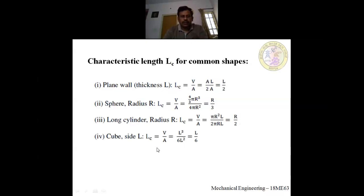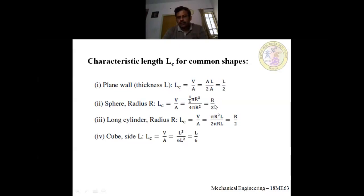For a cube, the volume is L³ and the total surface area is 6·L², since there are six faces each of area L². Dividing volume by area gives L³/(6·L²) = L/6. So the characteristic length for a cube is L/6. Try to remember these formulas as they will be useful when solving numericals.